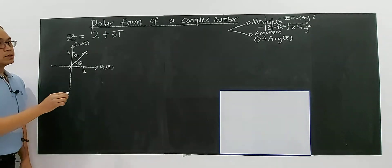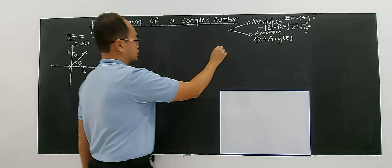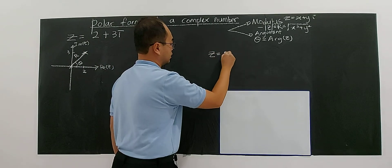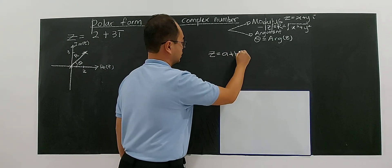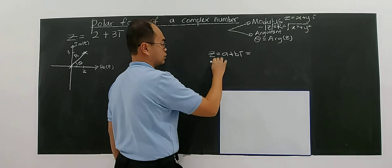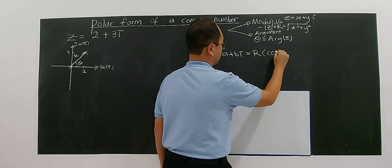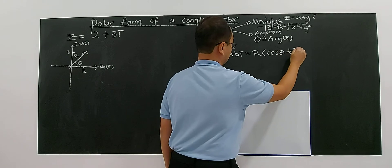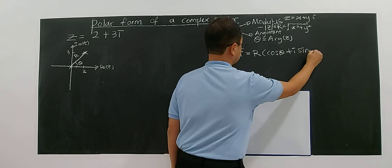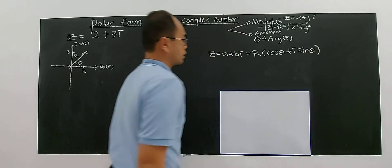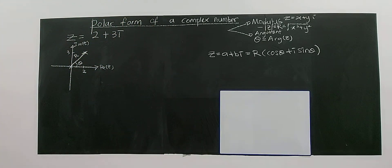When you convert a complex number into polar form, the formula will be r(cos θ + i sin θ), where r is the modulus and θ is the argument.